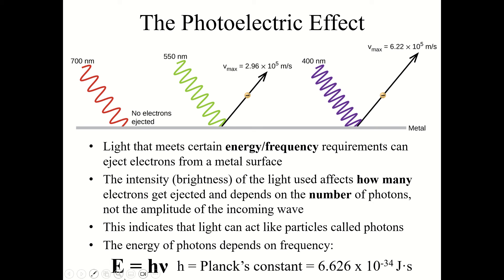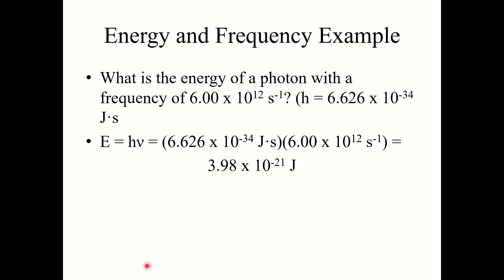This indicates light can act like particles called photons, and these photons have energy. The energy of photons depends on frequency: E equals h nu. E is energy, h is Planck's constant — 6.626 times 10 to the negative 34th joules seconds — and nu is frequency. Both equations will be on the reference sheet. For example, what is the energy of a photon with a frequency of 6.00 times 10 to the 12th inverse seconds? Plugging in gives 3.98 times 10 to the negative 21st joules.